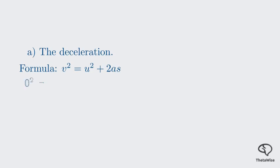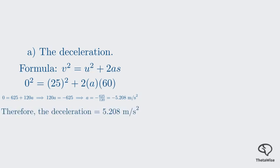Now let's substitute our known values into this equation. The final velocity is zero. The initial velocity is 25. The distance S is 60. And we are solving for A. This simplifies to zero equals 625 plus 120A. By rearranging the equation, we find that A equals negative 5.208 meters per second squared. This negative sign indicates the car is slowing down, as we expected. The deceleration, which is the magnitude of this acceleration, is 5.208 meters per second squared.